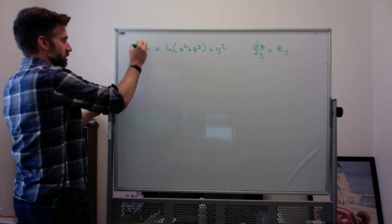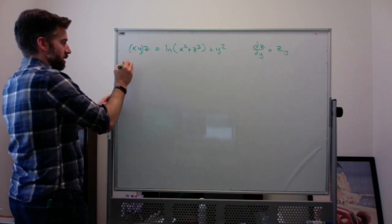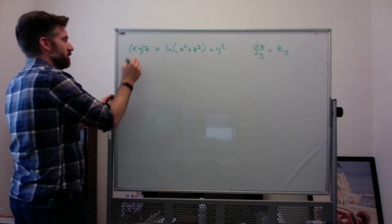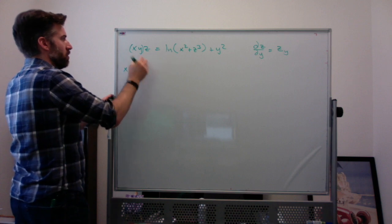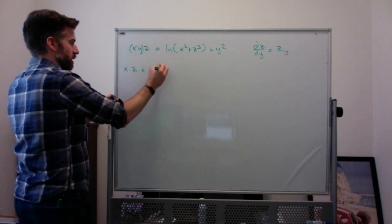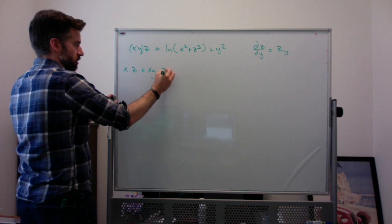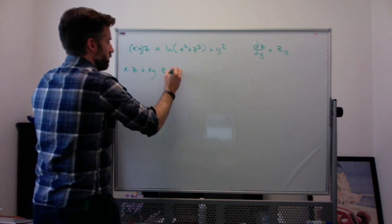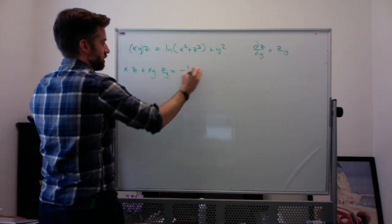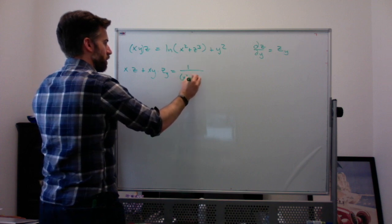So now x is actually going to be a constant. Derivative of xy is x times leave z alone plus leave xy alone. Derivative of z is zy or the partial of z with respect to y. Derivative of the natural log of some stuff is 1 over the stuff.